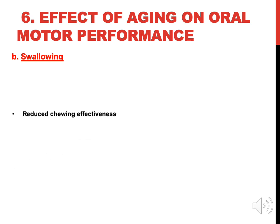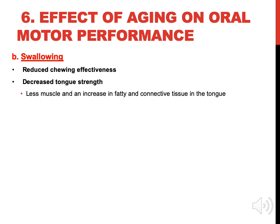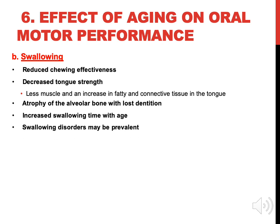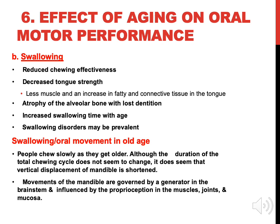Effect on swallowing: there is reduced chewing effectiveness, decreased tongue strength, less muscle and an increase in fatty and connective tissue in the tongue, and atrophy of alveolar bone with lost dentition. Swallowing time increases with age and swallowing disorders may be prevalent. Regarding oral movement during chewing in old age, people chew more slowly as they get older, although the duration of the total chewing cycle does not seem to change. Vertical displacement of the mandible is shortened, and mandibular movements are governed by generators in the brainstem, influenced by proprioception in the muscles, joints, and mucosa.